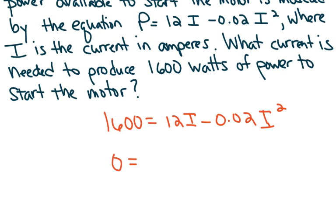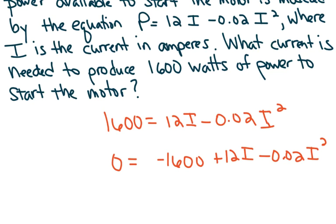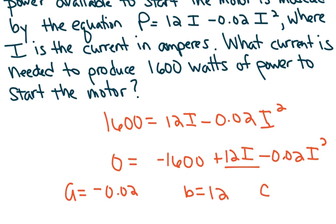Subtract 1,600 to set the equation equal to 0. We have positive 12i and negative 0.02i squared — it doesn't matter what order the quadratic is written in. A is always in front of the square term, so a is negative 0.02. B is always in front of the linear term, so b is 12. And c is always the constant, so c is negative 1,600. Be careful — many students mistake the first number they see as a, the second as b, and the third as c, but that's not how it works.